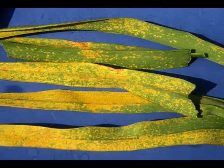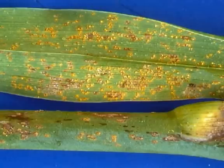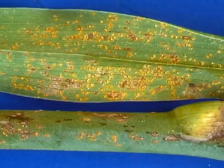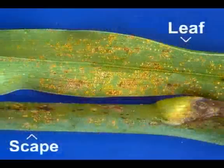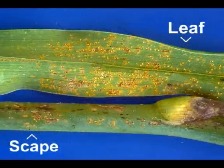The disease usually appears initially on the upper leaf surface, followed by infection on the lower leaf surface. The classic symptoms are small, raised, pimple-like pustules that develop on the leaves, and these are usually yellow or bright orange in color. Also, the scape or the flower stalk of the plant can show these particular symptoms.